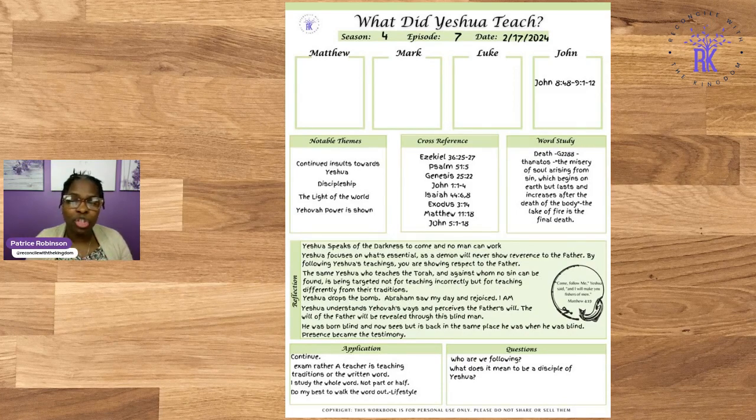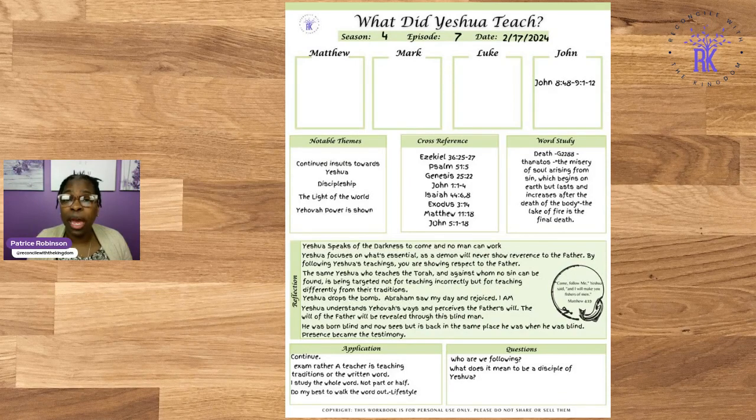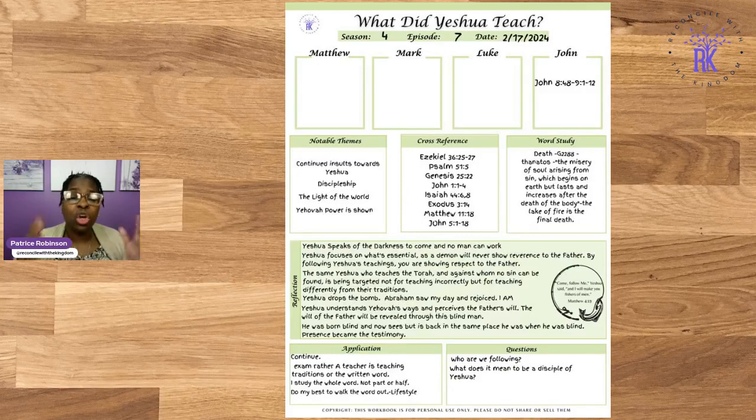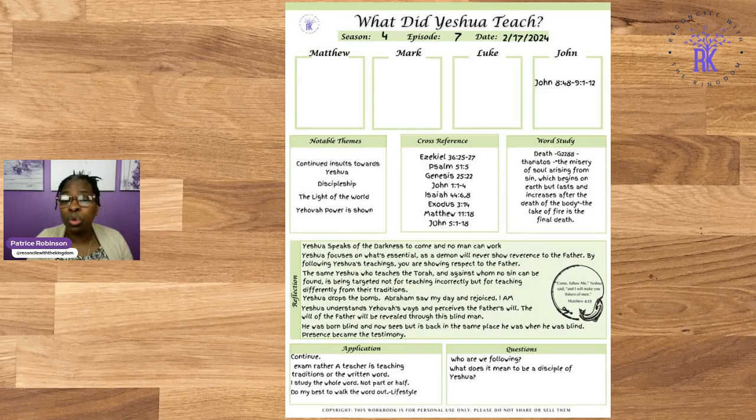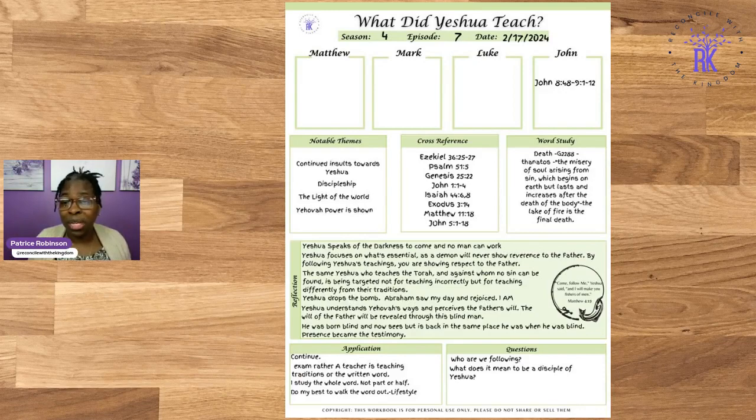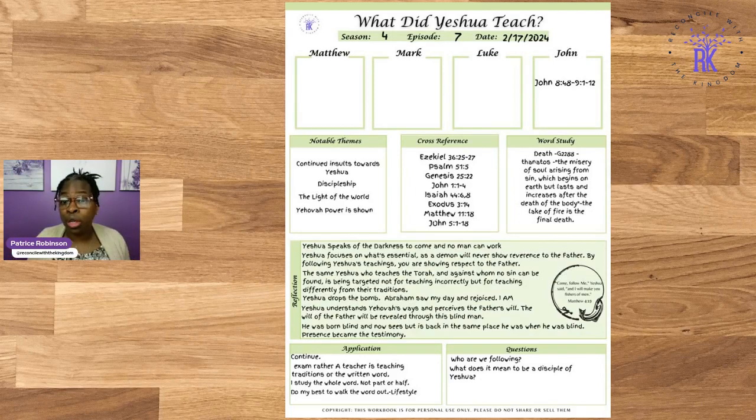This is from last week, episode number seven, which came from the passage from John chapter 8 verse 48 through chapter 9 verses 1 through 12. Notable themes in John: we have continued insults towards Yeshua, Yeshua still doing discipleship, teaching the disciples and making more disciples. People begin to believe on him. He is the light of the world, and we have Jehovah's power shown.